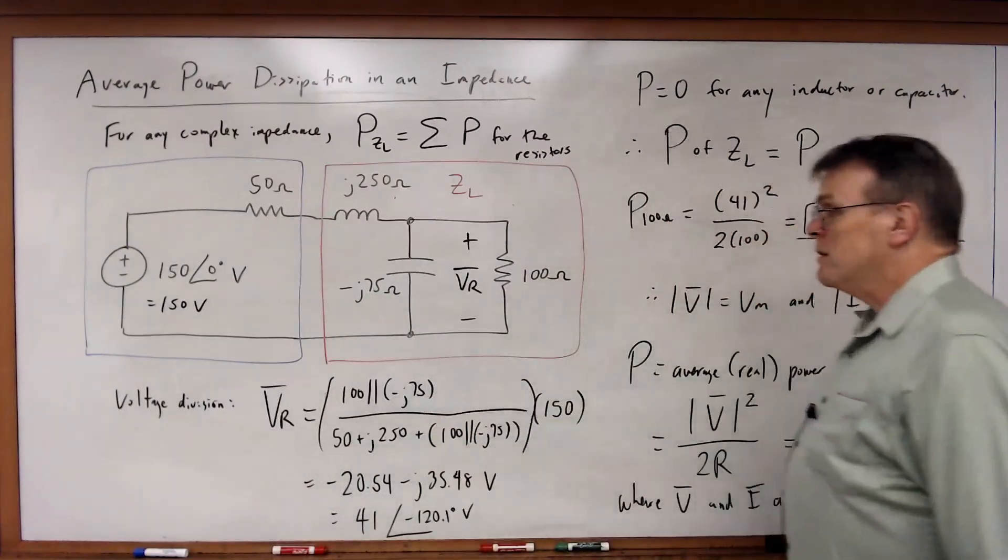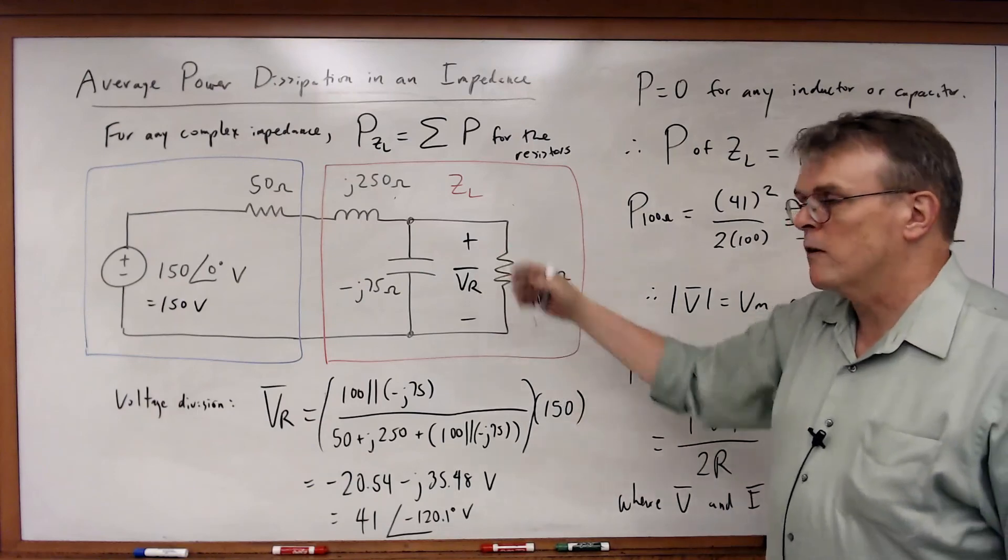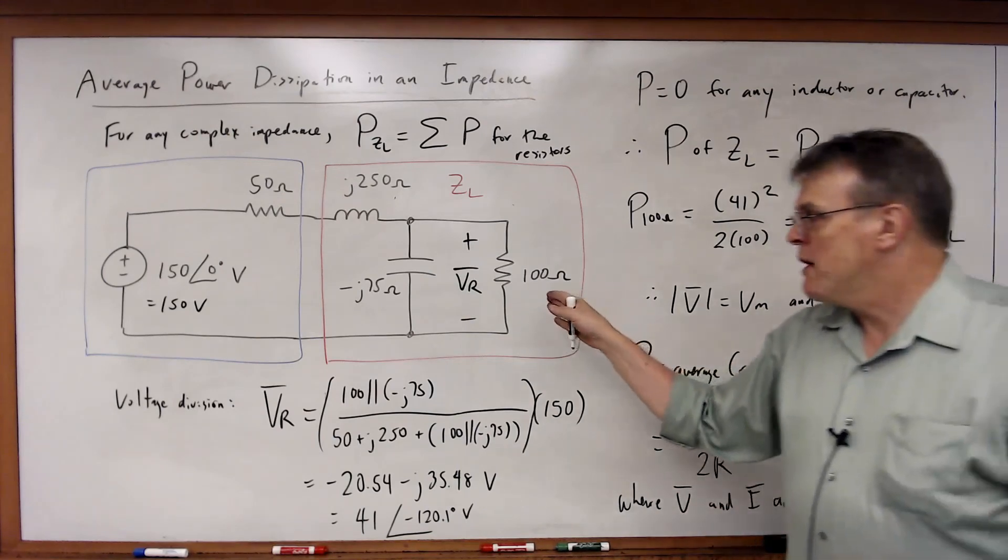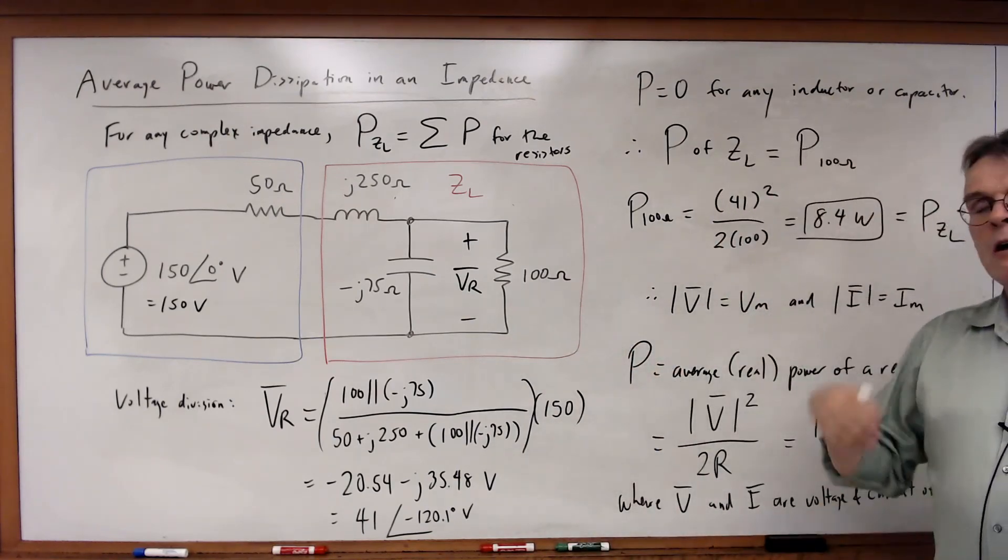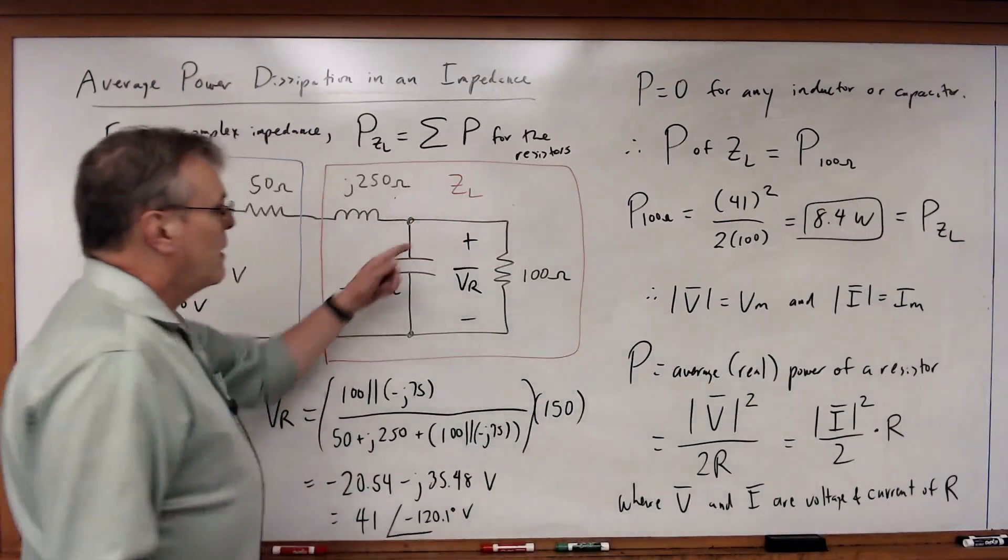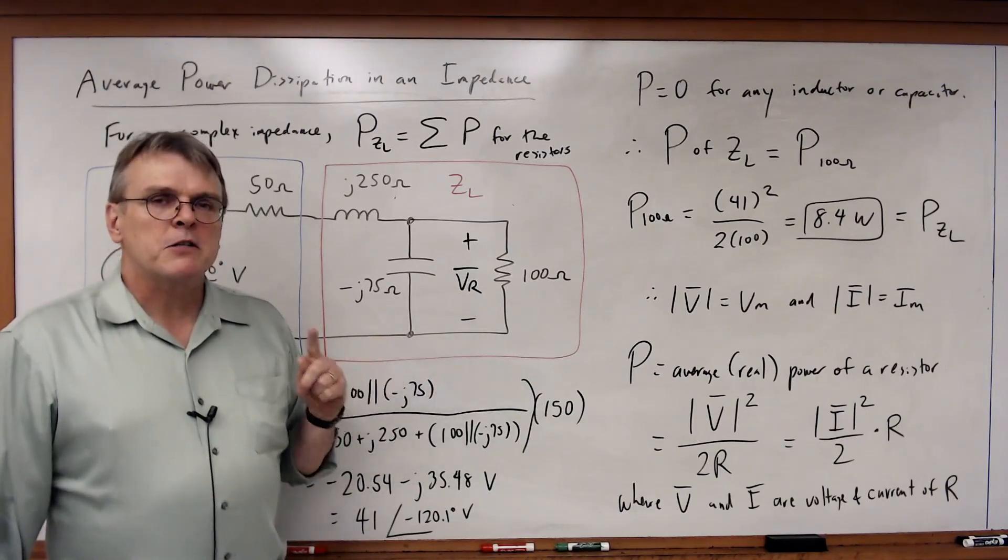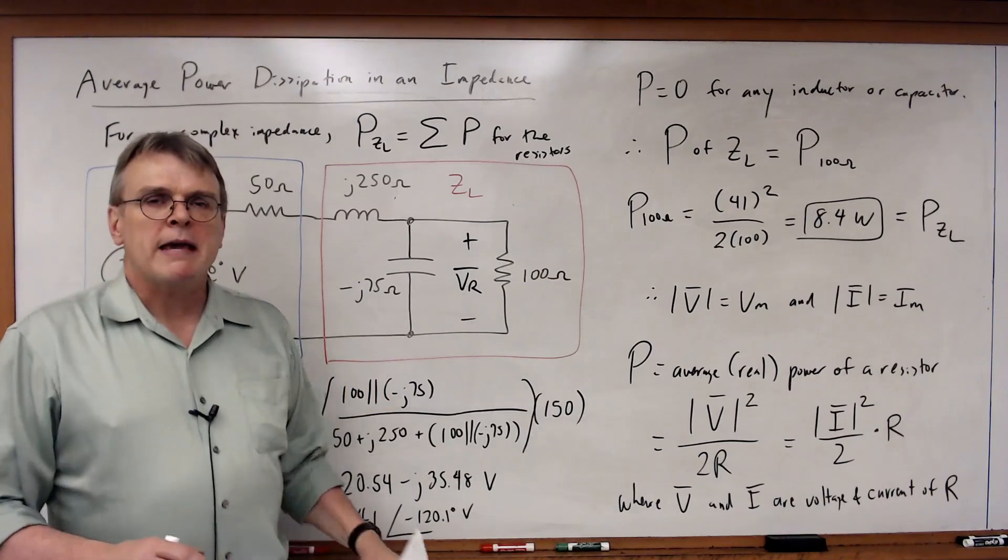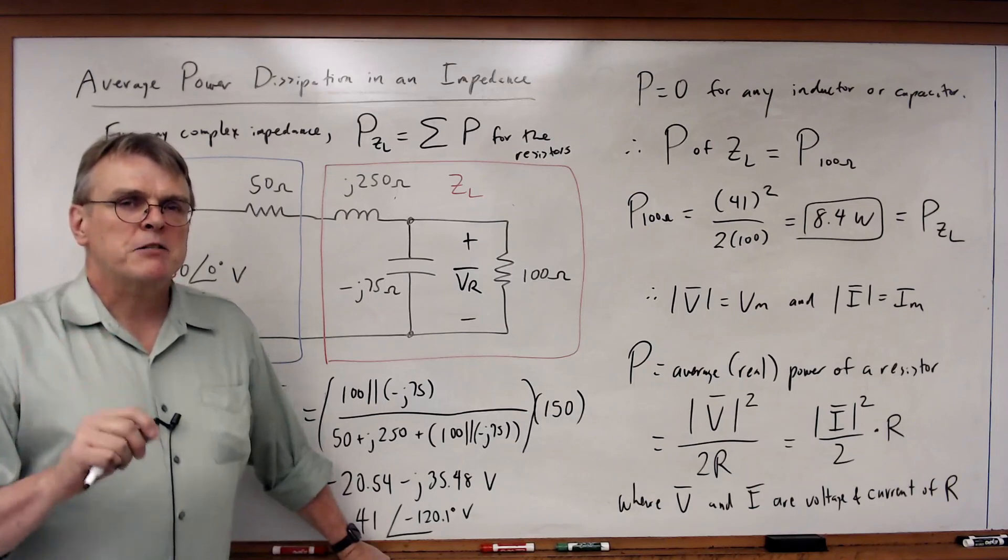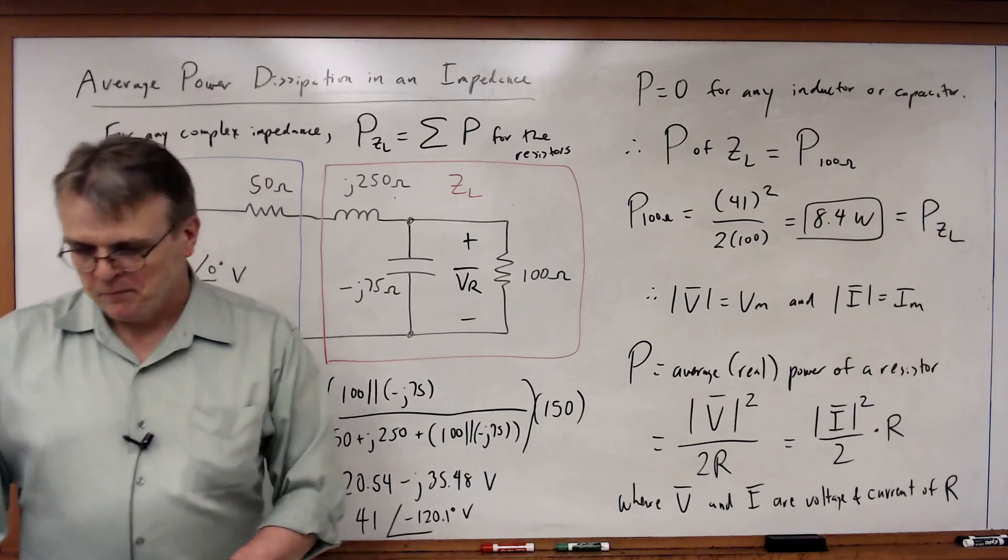In a nutshell, that's how we're going to calculate this. All you have to do is find the phasor voltage or current for a resistor, plug it into this, and then you have the real power being dissipated by that resistor. Pretty straightforward. You have a couple of problems to work on that. Now let's look at something we never really touched upon, but it's time to discuss it—maximum power transfer. Only now we're going to discuss it in an AC circuit. We'll look at that next time. Thank you.